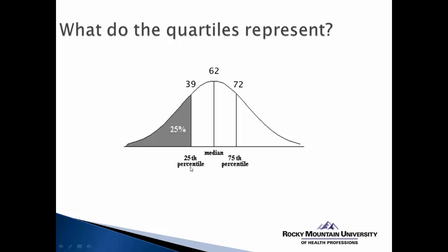The 25th percentile, or the first quartile, is represented by a score of 39. That means 25% of all the scores in our distribution are less than 39. We can also say this is the 25th percentile, so 25% of all scores will be below 39, but conversely 75% of all the scores will be above 39.